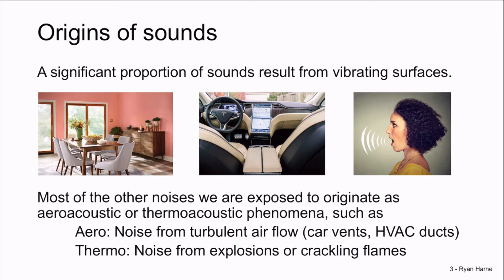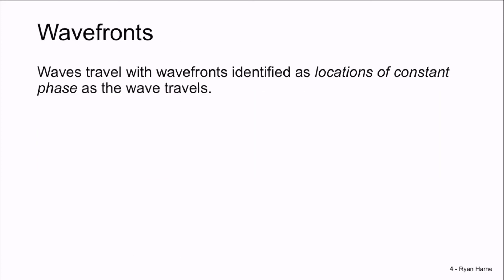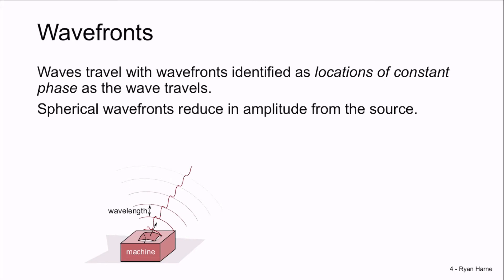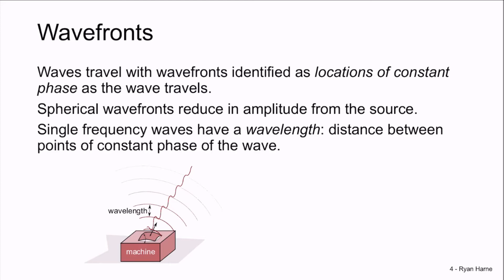What are some of the characteristics of these acoustic waves caused by vibrating surfaces? Well, they travel with wavefronts identified as locations of constant phase. So here, this is a schematic of a spherical wavefront. It reduces in amplitude as distance increases from the source. For single-frequency wavefronts, we identify a wavelength, which is the distance between points of constant phase of the wave. For non-single-frequency waves, we also see that the amplitude of the wave decreases as distance increases from the source. And we can likewise identify points of constant phase to track as time goes on.